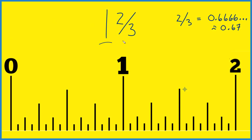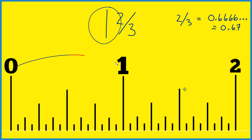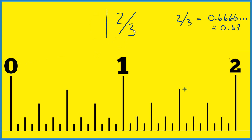So let's find one and two thirds of an inch on our ruler or tape measure here. Here's the one inch — from here to here, that's one inch. So what we're really interested in is where is two thirds of an inch right here? So we'd have our one and two thirds — that's what we need to find.